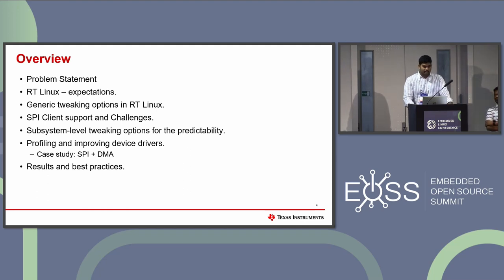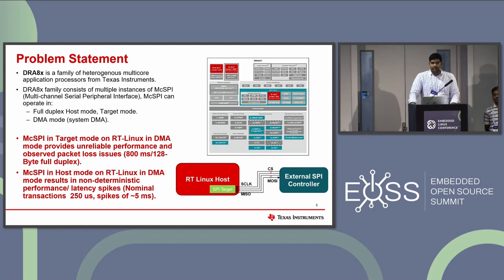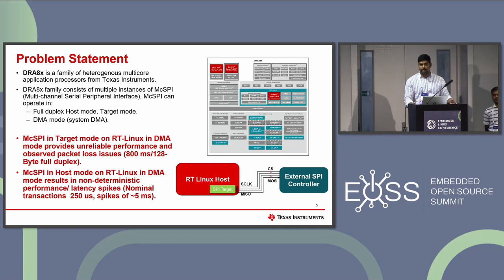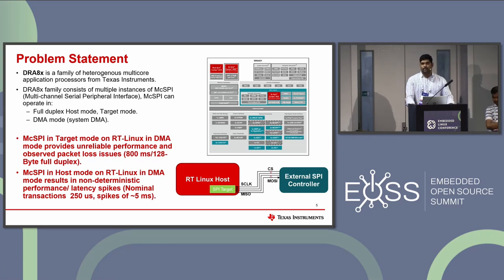We'll go through the problem we were facing on our DRA devices. We have multiple SPI controllers, and using SPI in DMA mode with RT-Linux enabled, we were seeing poor performance in the SPI target mode. SPI target mode is the mode where we are the receiving entity — we receive the clock and the chip select. SPI host mode is the controller entity where we initiate the transaction. In the target mode, the RT-Linux host does not have control of when the transaction is being initiated.